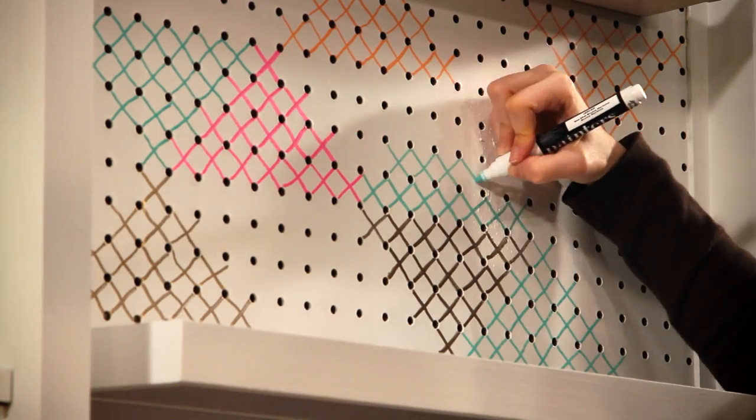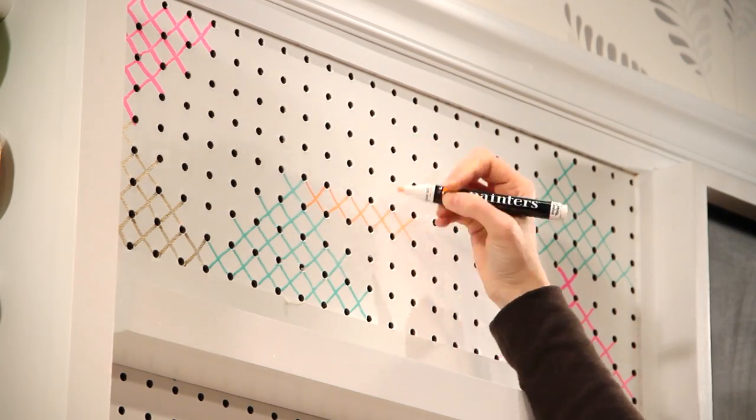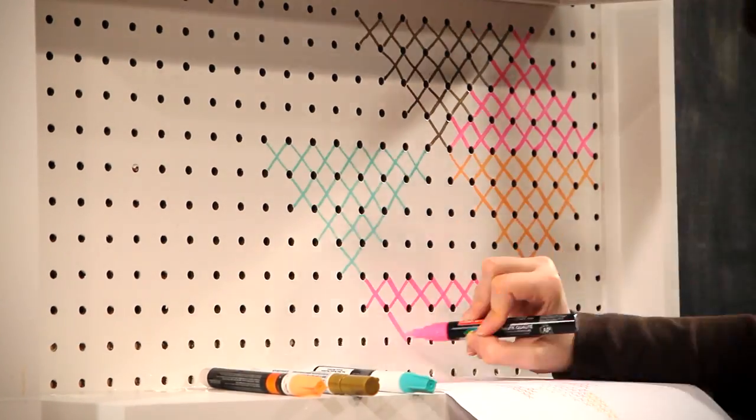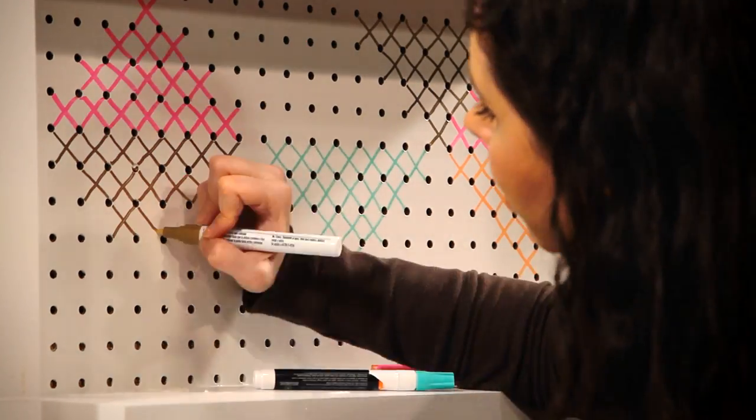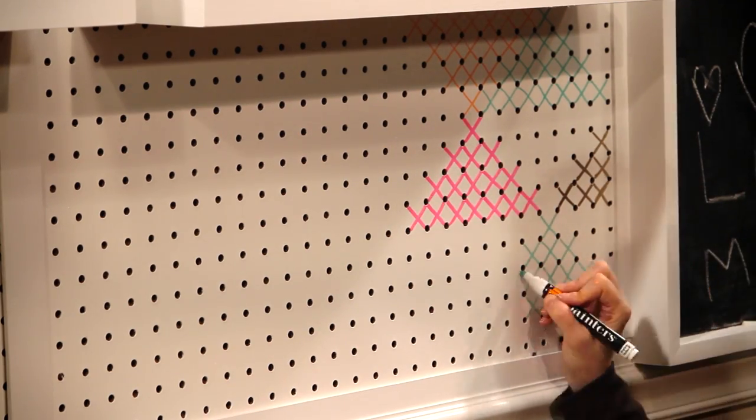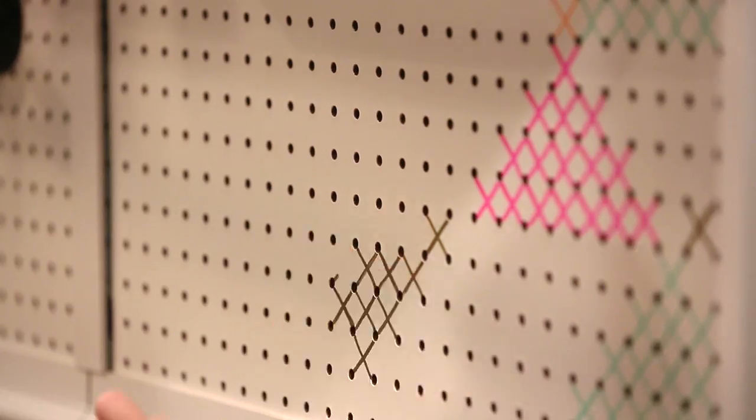Do a mix of triangles pointing up and down with different colors connecting. Yeah, it'll take a while, but once you get started, it's kind of addictive. Also just think, you'll have a pretty and practical spot to hang craft bins and shelves this year.